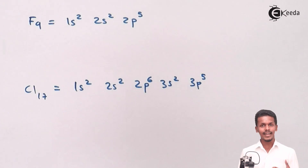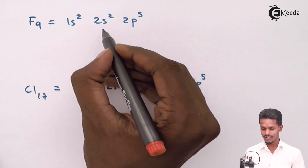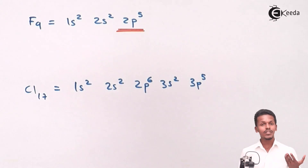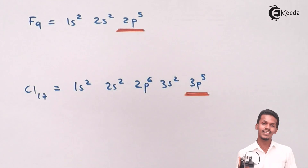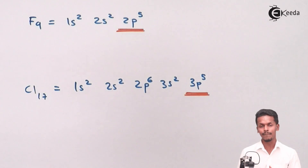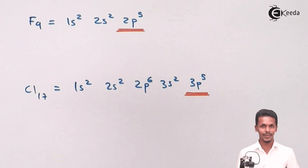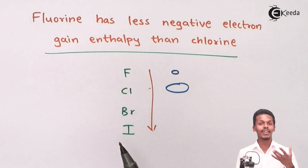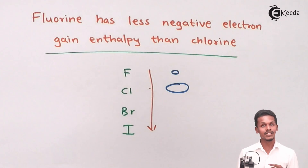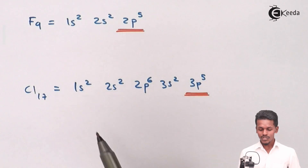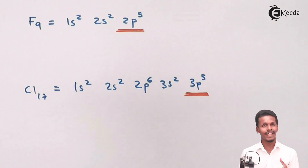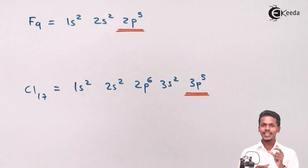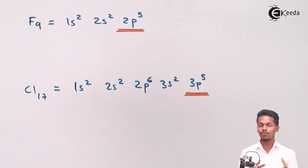Here you can observe very clearly that the outermost shell in fluorine is shell 2, and the orbital is 2p, while in the case of chlorine it is 3p. Now, when it comes to electron gain enthalpy, we are adding an electron to the outermost shell of the atom. Whenever we add an electron to fluorine, the main reason is that fluorine has less atomic size than chlorine. Because fluorine has less atomic size, it has more density of electrons — 9 electrons are acquired in a small volume, making the electron density more in fluorine.